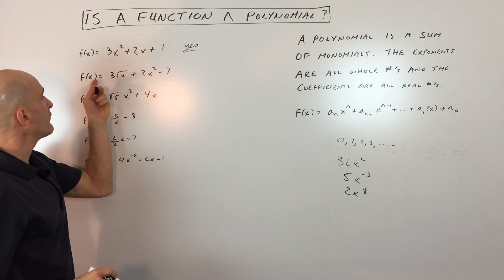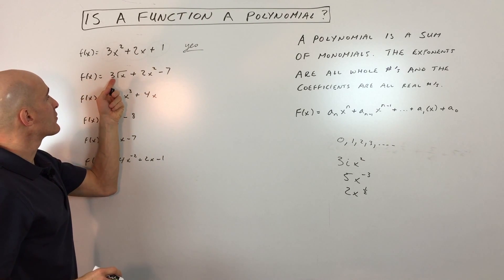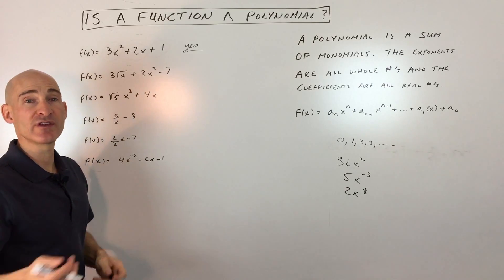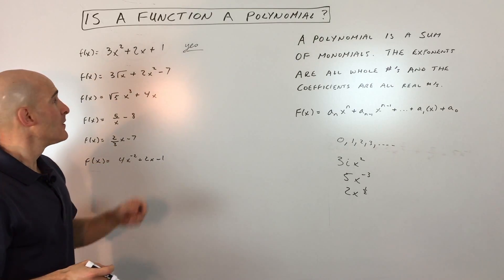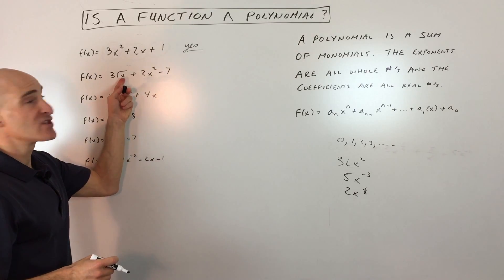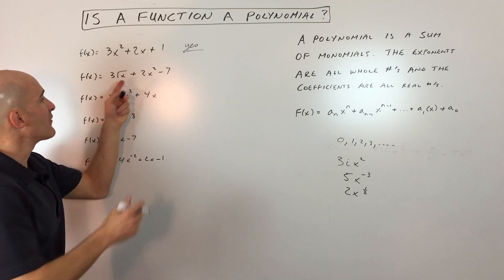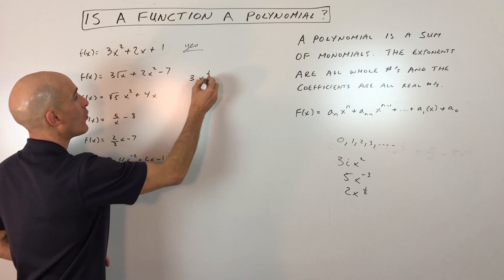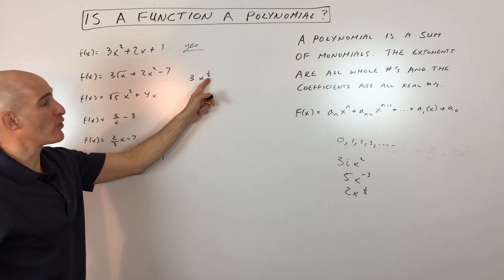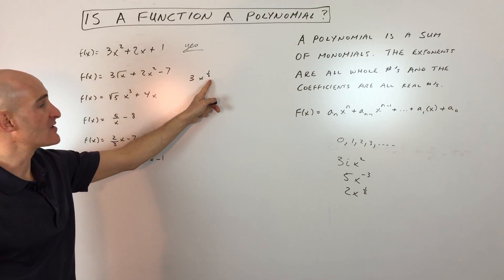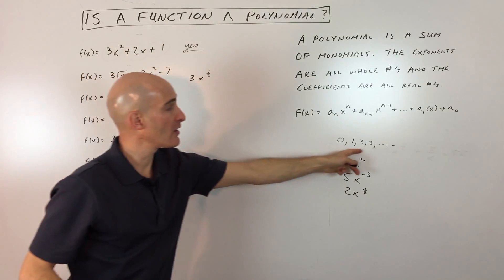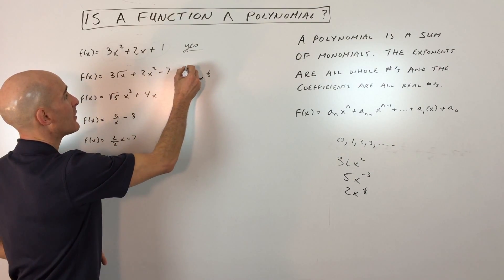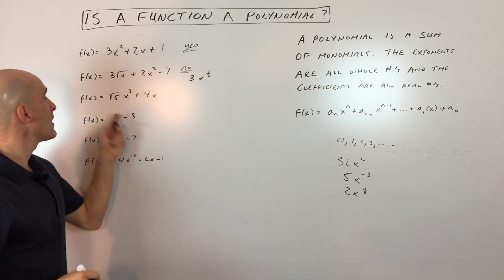The second one: f(x) = 3 times the square root of x + 2x² - 7. Is that one a polynomial? Well, this one actually is not, because the square root of x is really x to the 1/2 power. You can see that exponent is not a whole number — it's a fraction. So this one is not a polynomial.